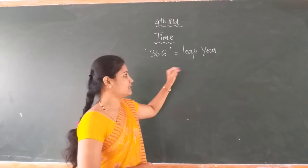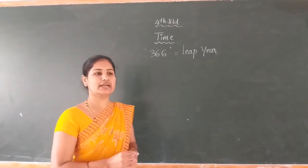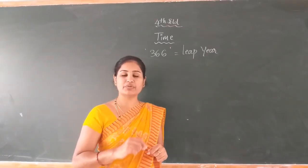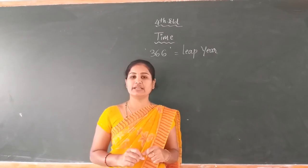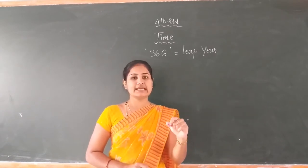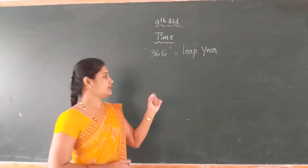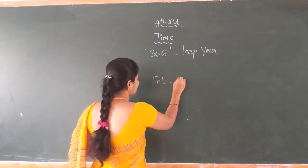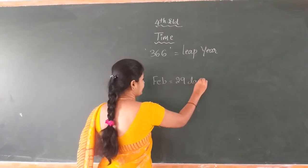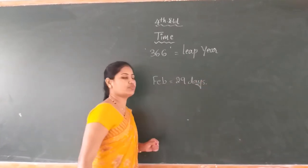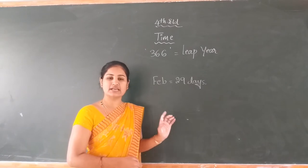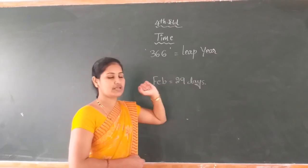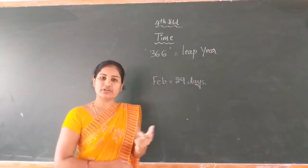So this year we call it as a leap year. Dear student, one more clue for identification of a leap year is February — we can add 1 day to February. That year is increased by 1 day, making it 366. Dear student, the February month has 29 days every 4 years once. Therefore, when February has 29 days, that year we call it as a leap year.